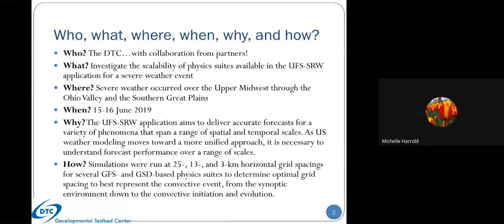The event occurred on June 15-16, 2019. It had two distinct areas of convection: one in the upper Midwest of the Ohio Valley, and another area in the Southern Great Plains. We initialized our model runs at 0Z on the 15th, with 48-hour forecasts with hourly output.